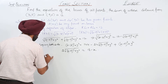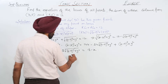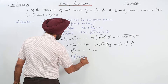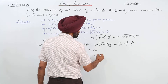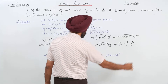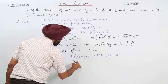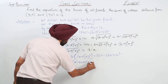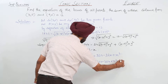Squaring again: 4 times [(x minus 9) whole square plus y square] is equal to 324 minus 36x plus x square.